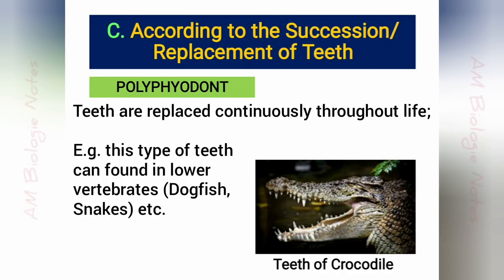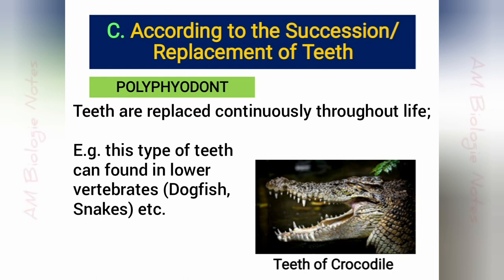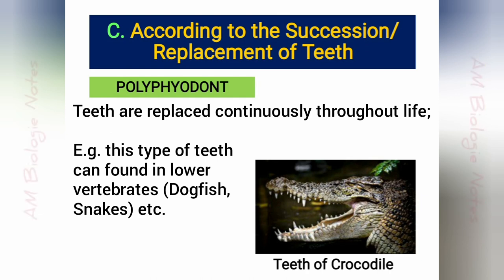Polyphyodont: In lower vertebrates, the teeth are replaced continuously throughout life. This is known as the polyphyodont condition. Examples include teeth of dogfish, snakes, etc.